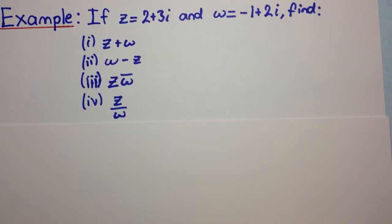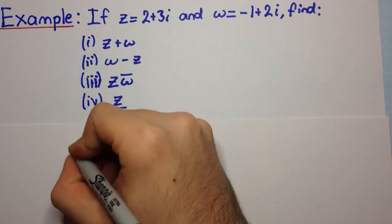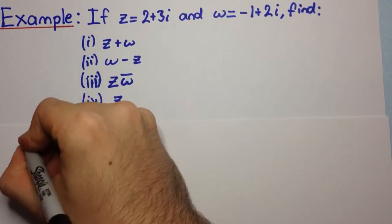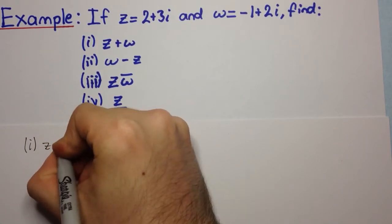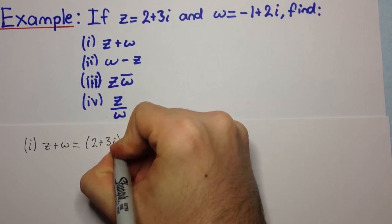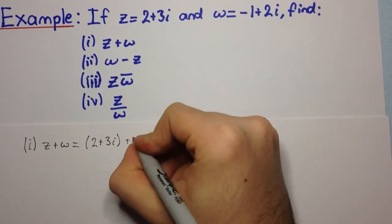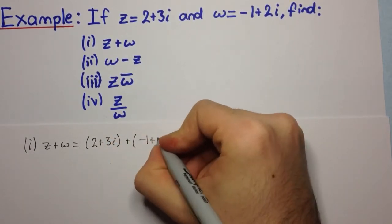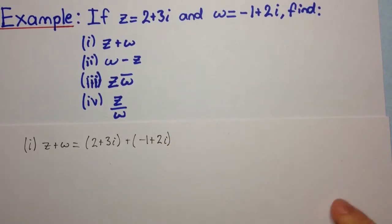These are fairly straightforward. For the first one, we want z plus omega. That's equal to 2 plus 3i plus omega, which is minus 1 plus 2i. The way we do this is just as if we were collecting like terms with an algebraic expression.